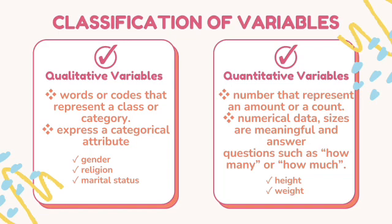After we identify the basic terms in statistics, we will now proceed on the classification of variables. There are two classifications. The first one is qualitative variables and the second one is quantitative variables. Qualitative variables are words or categories that represent a class or category, expressed as categorical attributes such as gender, religion, marital status, and highest educational attainment.